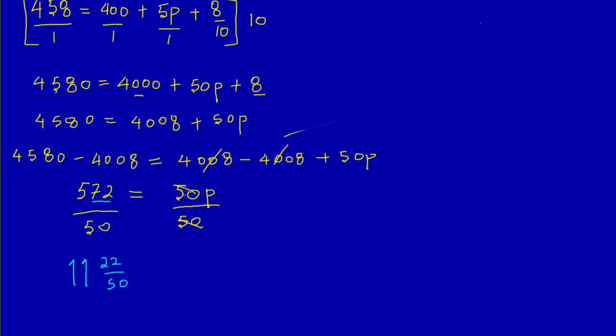50 would cancel 50 there, so I would be left with p. But if we look at this carefully, it can be reduced even lower as a fraction. So I could say 2 into 22 goes 11 times, and 2 into 50 goes 25 times. So therefore our answer is in its lowest term. I would have p is equal to 11 and 11 over 25.